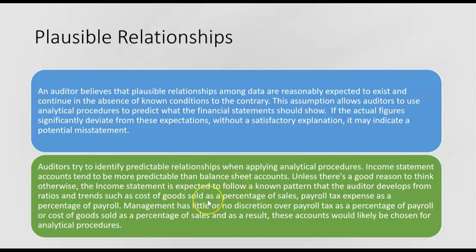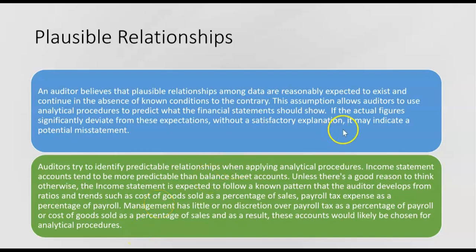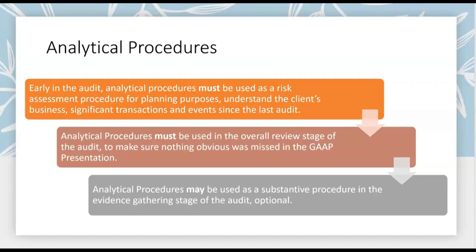Income statement accounts tend to be more predictable than balance sheet accounts. The income statement is expected to follow a known pattern that the auditor develops from ratios and trends, such as cost of goods sold as a percentage of sales, or payroll tax expense as a percentage of payroll. Management has little or no discretion over payroll tax as a percentage of payroll — it should be about 12 percent. Cost of goods sold as a percentage of sales might be about 30-50 percent in some industries, but it shouldn't be 10 or 80 percent if it never was before.